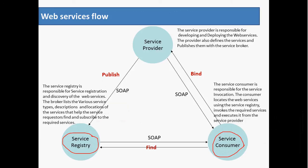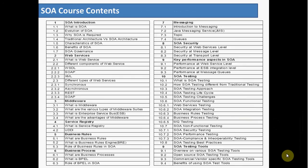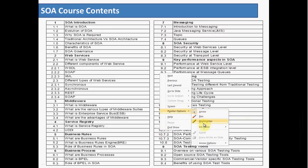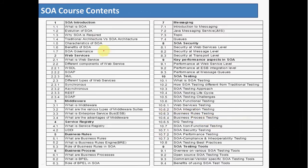As part of the QA Masters course content, the topics covered for SOA include: an SOA introduction covering what SOA is, how it evolved, why it is required, differences between traditional architecture and SOA architecture, characteristics, benefits, SOA governance, and the various components of SOA in detail.